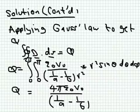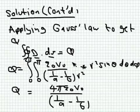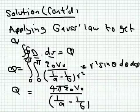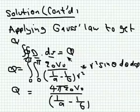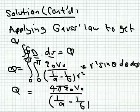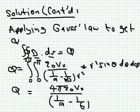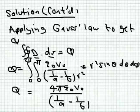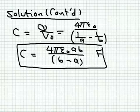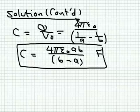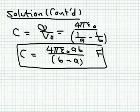Applying Gauss's law around the positive (inner) sphere: D dot dS with dS equal to r squared sine theta d-theta d-phi in the r-direction. The angular integration over theta from 0 to pi and phi from 0 to 2 pi gives 4 pi. The total charge is Q equals 4 pi epsilon_0 V_0 over (1/a minus 1/b). Dividing Q by V_0 gives the capacitance: C equals 4 pi epsilon_0 over (1/a minus 1/b), which simplifies to 4 pi epsilon_0 times ab over (b minus a).